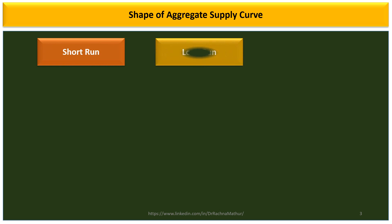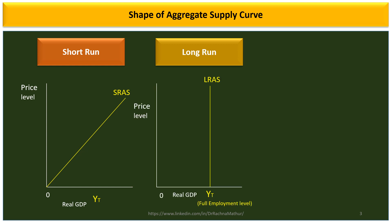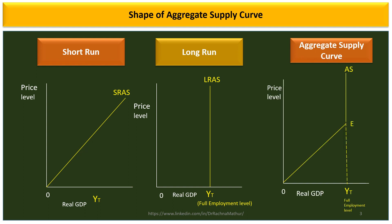Let's start with the aggregate supply curve. There are two important features: it varies between the short run and the long run. The short run aggregate supply curve is an upward sloping curve, showing that supply can be increased. But in the long run, it becomes a vertical straight line at the level of full employment, showing that supply cannot increase beyond full employment. The total aggregate supply curve is therefore in the form of a kinked line.